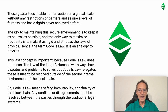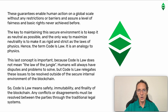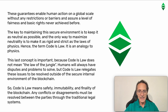These guarantees enable human action on a global scale, without any restrictions or barriers, and assure a level of fairness and basic rights never achieved before. The key to maintaining this secure environment is to keep it as neutral as possible, and the only way to maximize neutrality is to make it as rigid and strict as the laws of physics — hence the term Code is Law. It is an analogy to physics. This last concept is important because Code is Law does not mean the law of the jungle. Humans will always have disputes and problems to solve, but Code is Law relegates these issues to be resolved outside of the secure internal environment of the blockchain. So Code is Law means safety, immutability and finality of the blockchain. Any conflicts or disagreements must be resolved between the parties through the traditional legal systems.